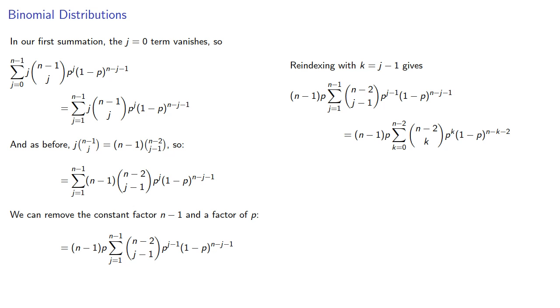And our series is going to be the binomial expansion of p plus 1 minus p to power n minus 2. And that simplifies to... and so our first summation, n minus 1 times p.